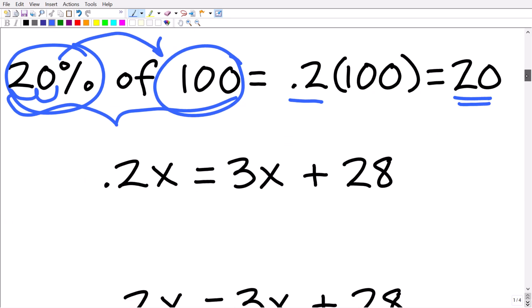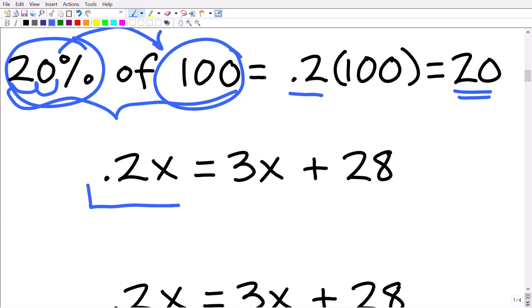Well, let's take a look at this setup right now. So this is 20% of the number x, right? And it's equal to what? Well, three times the number is 3x, right? So 3x means three times this number x plus 28. Okay, so at this stage, all we need to do is be able to solve this equation for x.